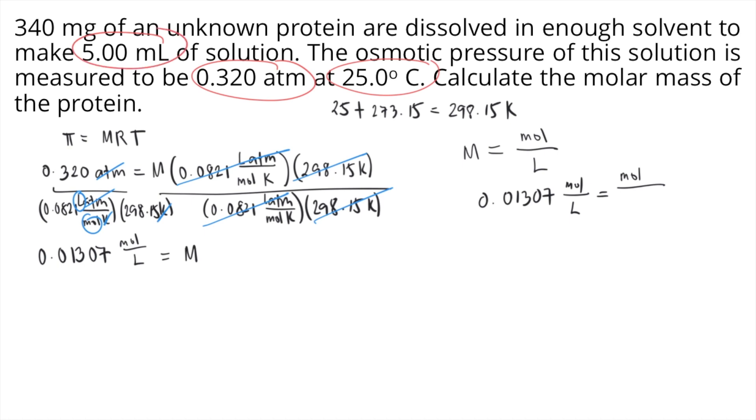So we need to convert first 5 ml into litres. How do we convert ml to litres? We divide ml by 1,000. So 5 divided by 1,000, that is 0.005 litres.